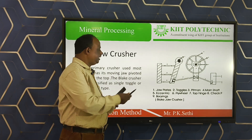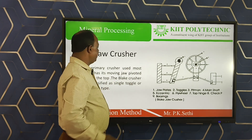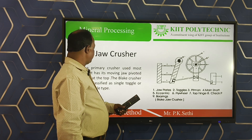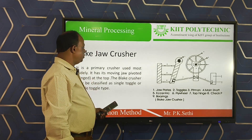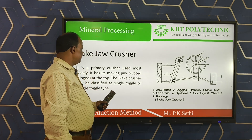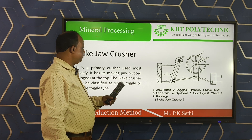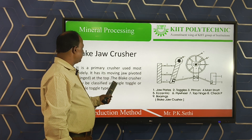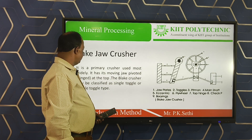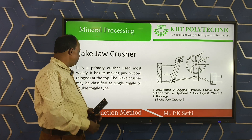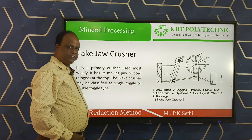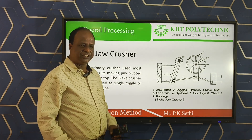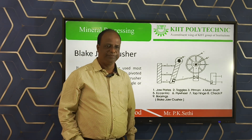These Blake type crushers are either having two toggles or a single toggle. According to that, the Blake type jaw crusher is divided into either single toggle type jaw crusher or double toggle type jaw crusher.